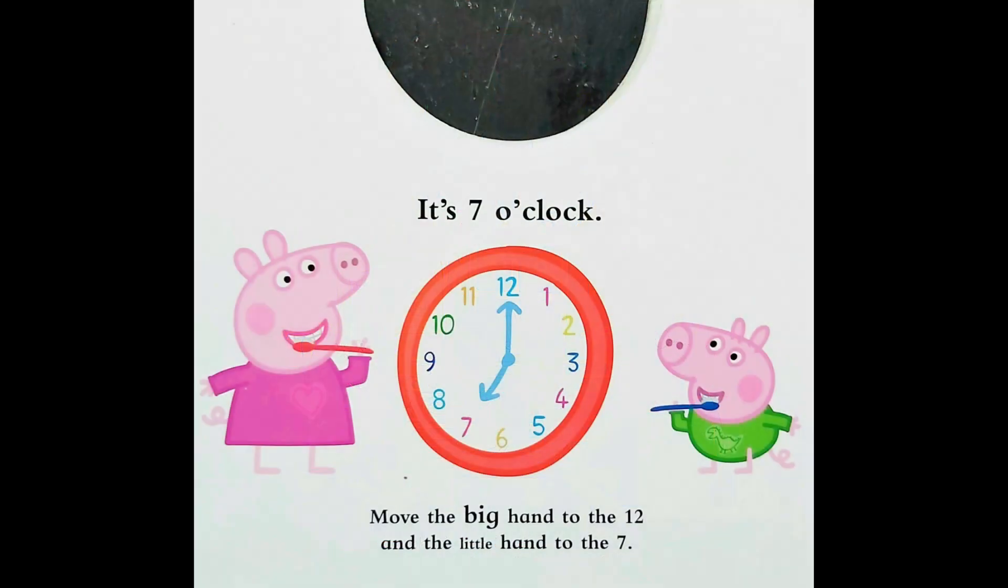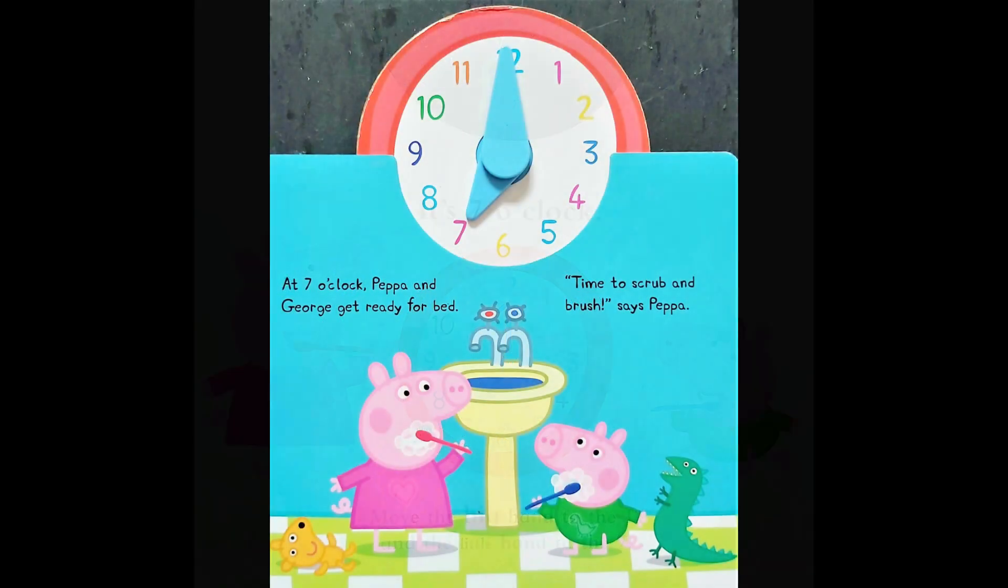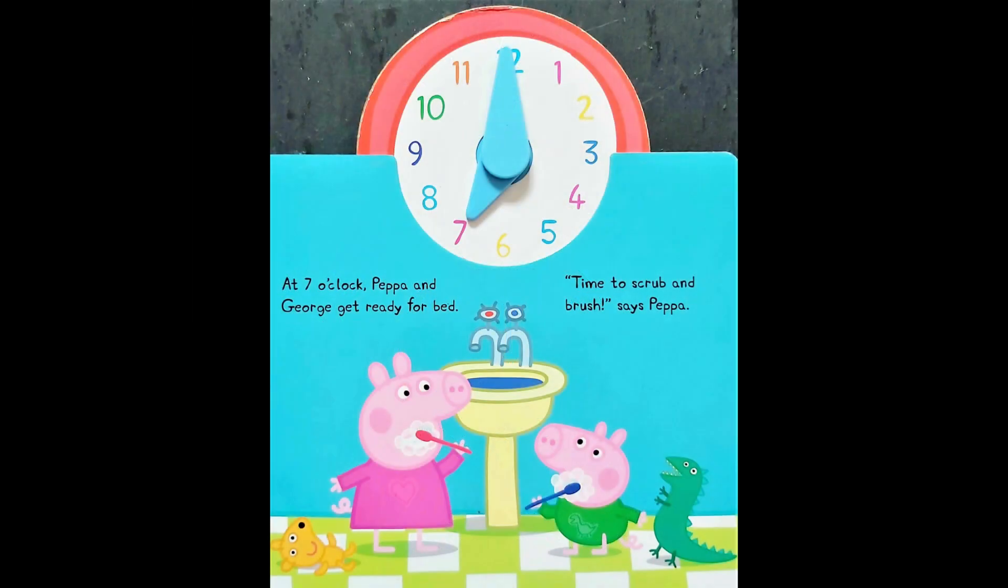It is seven o'clock. Move the big hand to the twelve and the little hand to the seven. At seven o'clock, Peppa and George get ready for bed. Time to scrub and brush, says Peppa.